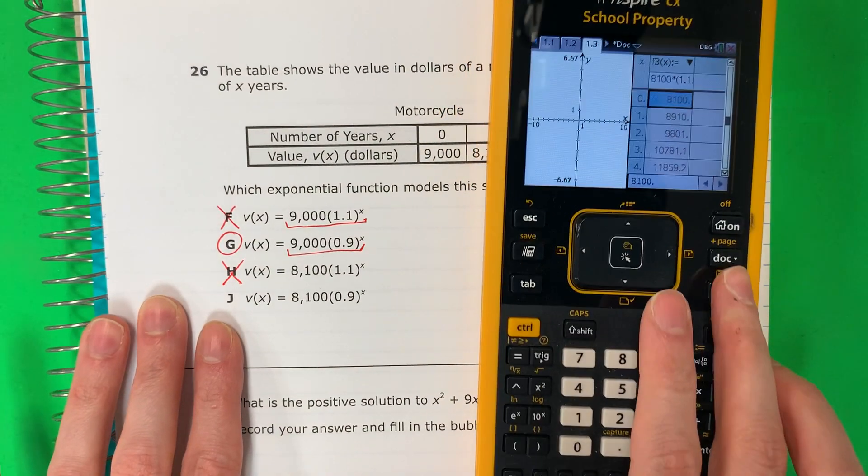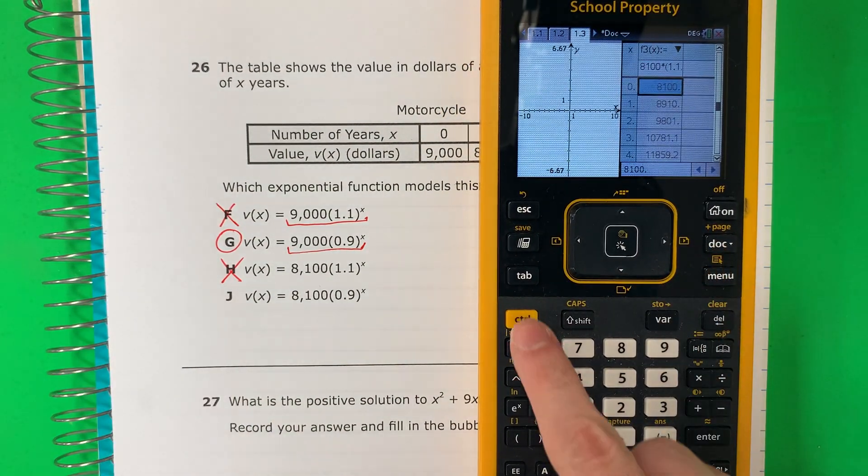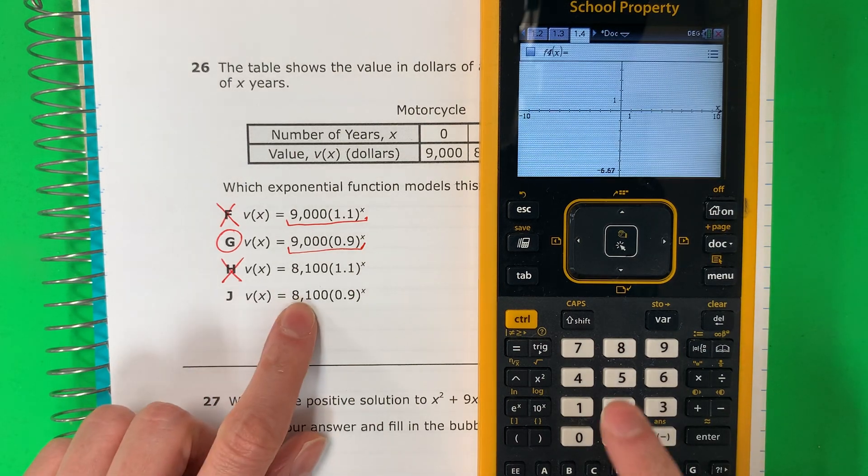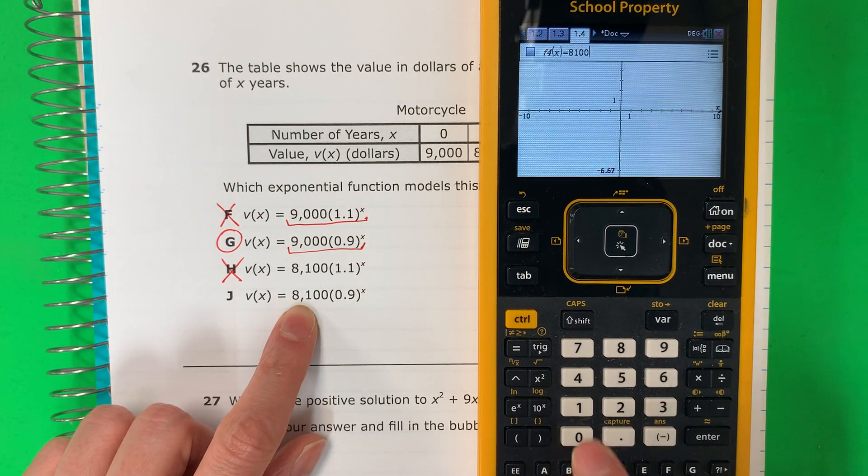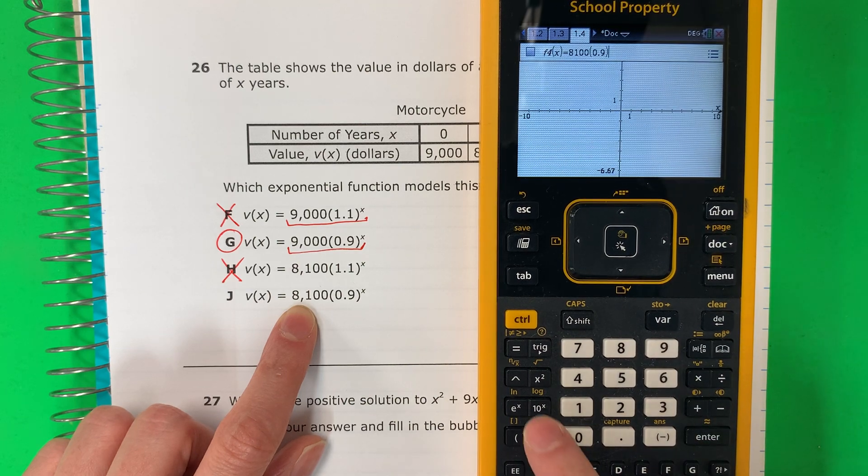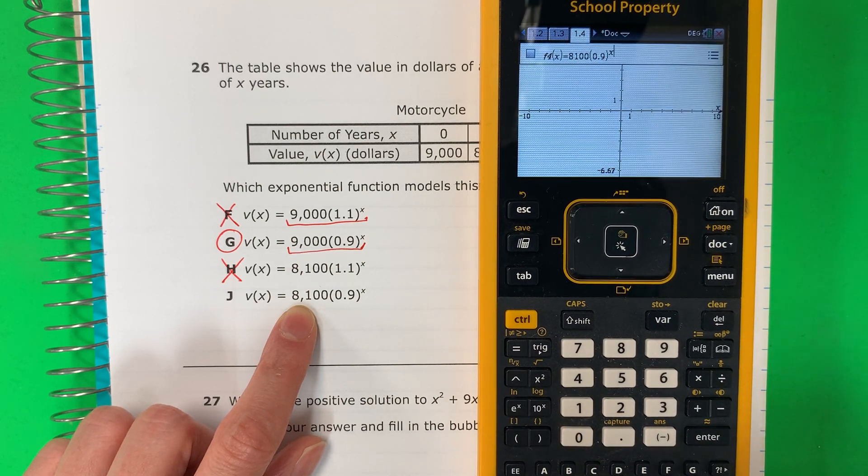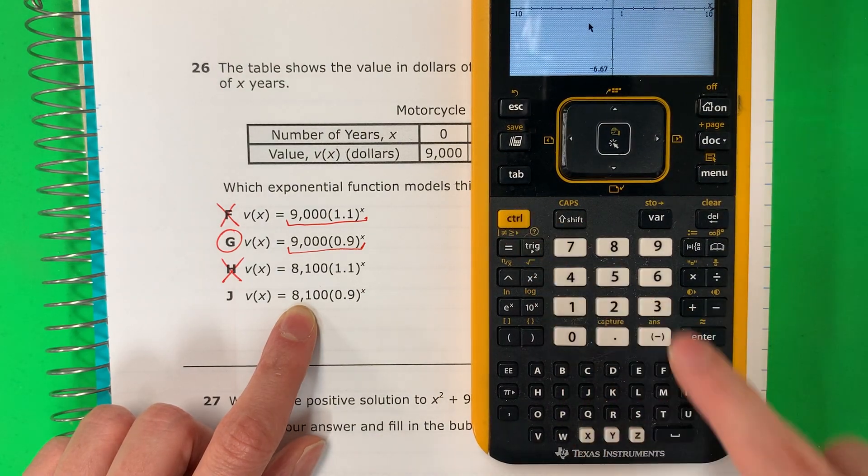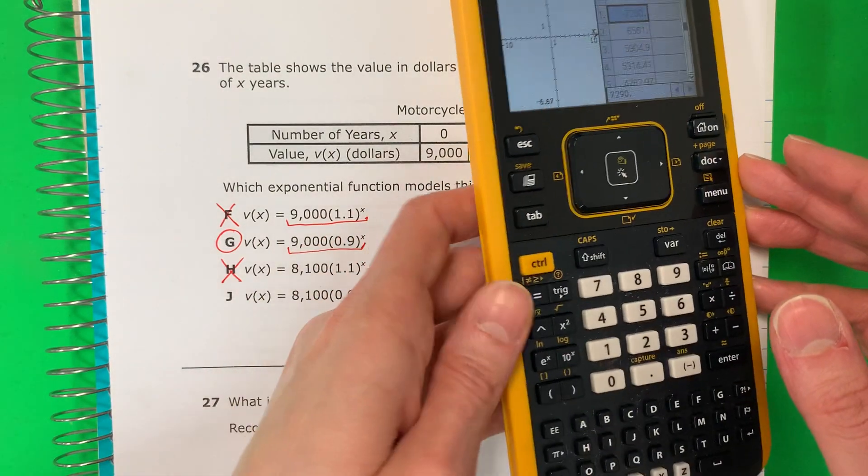Let's just do J really fast. Vamos a hacer la J muy rápido. Control. Dock. 2. 8,100. Parenthesis. 0.9. Parenthesis. Exponent. X. Enter. Control. T. Go up.